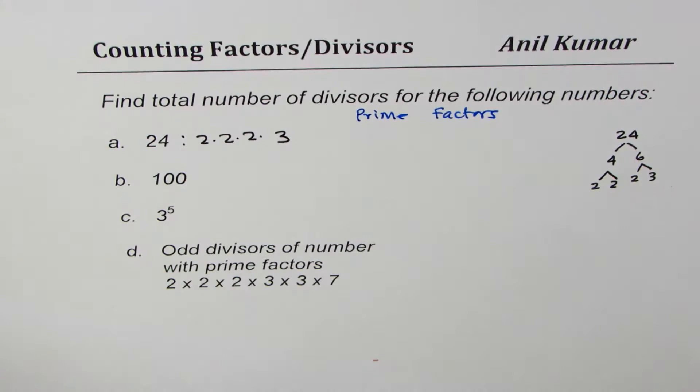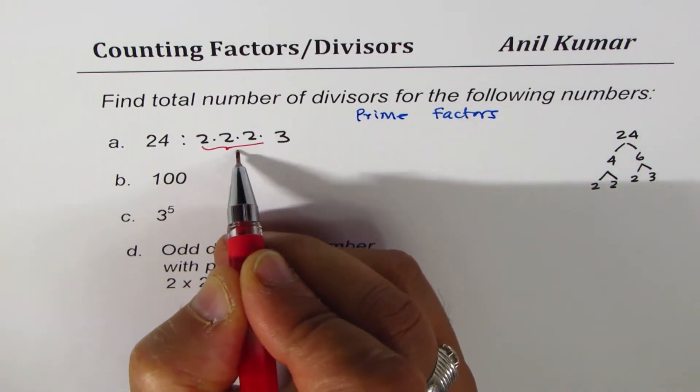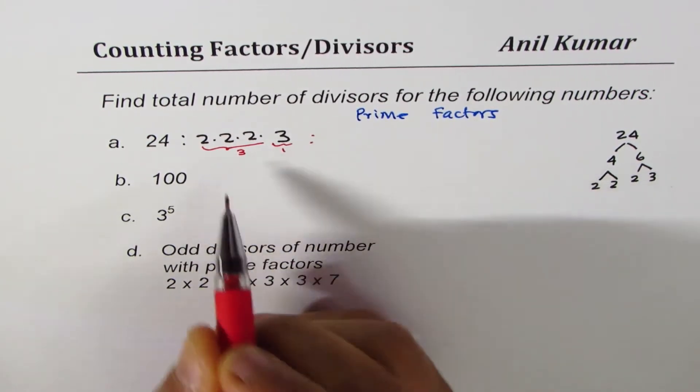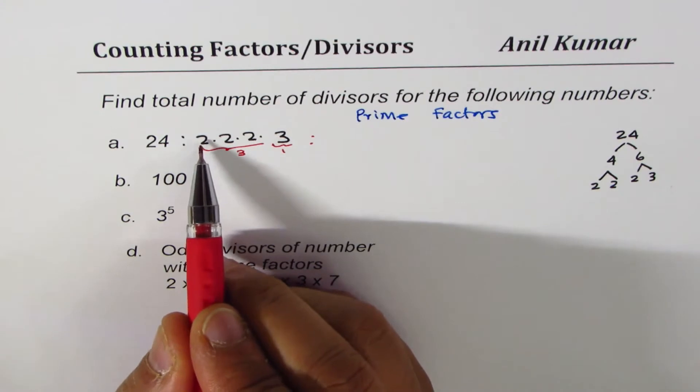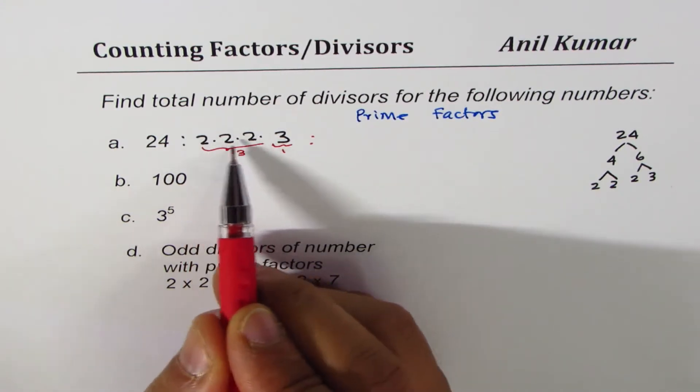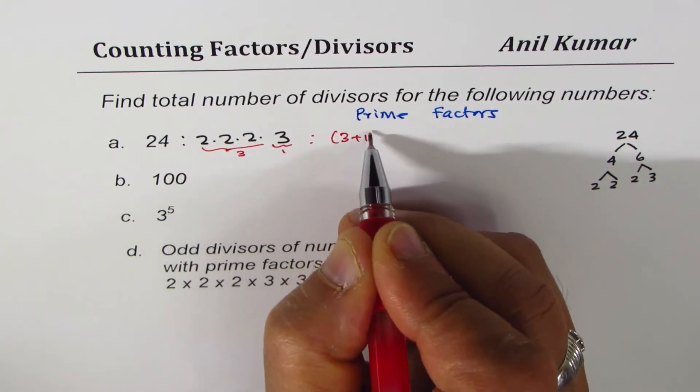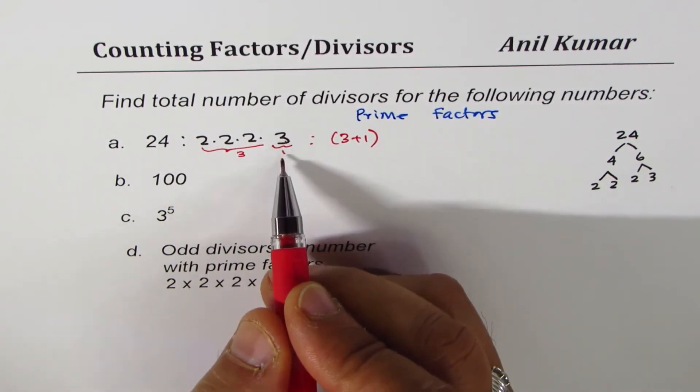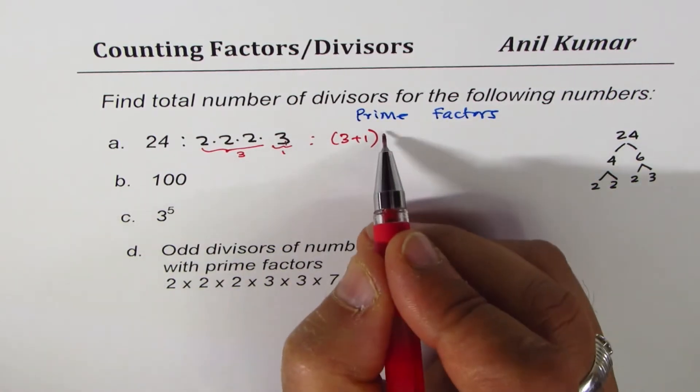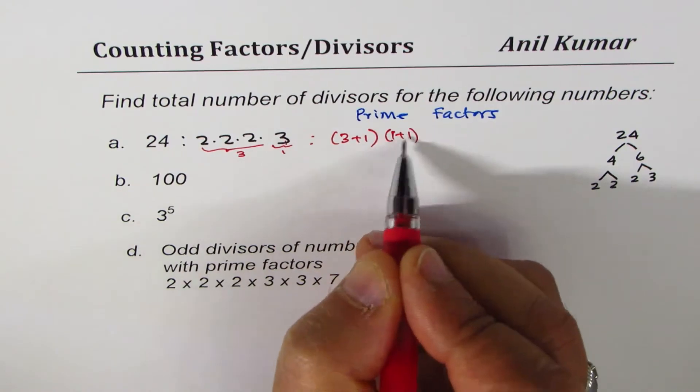Now in this case how many 2's do we have? We have 3 2's and we have 1 3. So the combinations will be you could take any combination of 2's or you may not take them at all, so we have four ways of doing it, that is 3 plus 1 ways of selecting 2's. In case of 3 also you may take it you may not take it, so we have two ways, so we'll write 1 plus 1 since there is 1 3 plus 1.